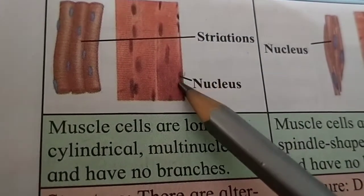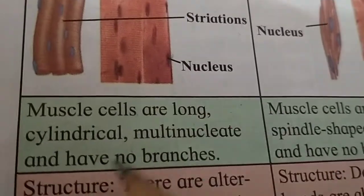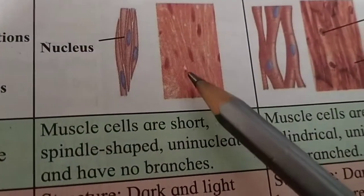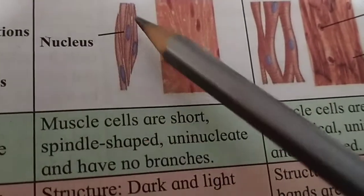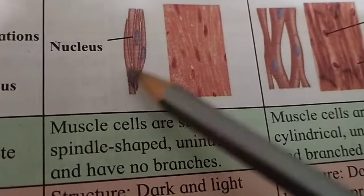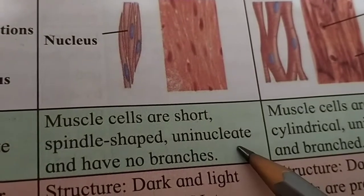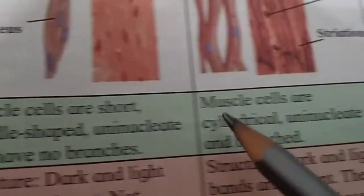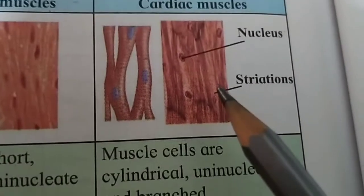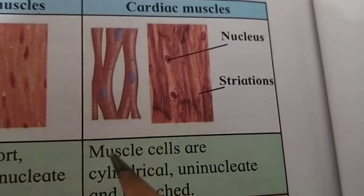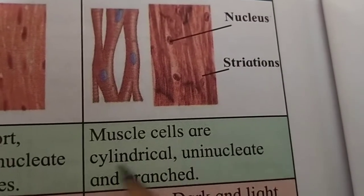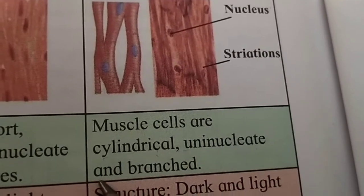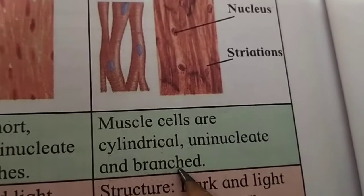Non-striated muscle cells are short, spindle-shaped, uninucleated, and have no branches. Cardiac muscle cells are cylindrical, uninucleated, and have branches.